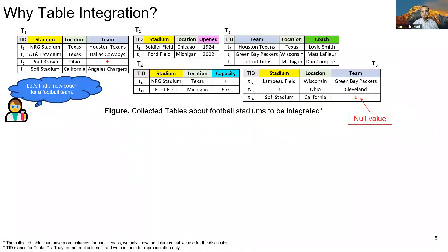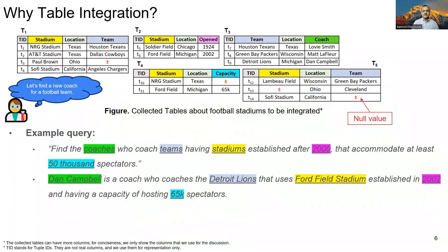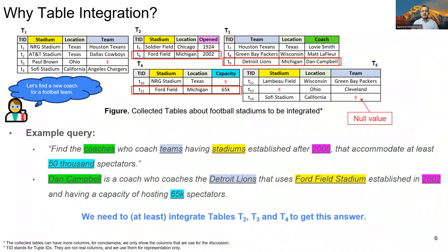The plus-minus symbols in this table represent null values present in the collected table. Also, TID is not a real column — we use it only to identify the tuples. To fulfill the team's requirement, the data scientist may want to run a query such as: find the coaches who coach teams having stadiums established after 2000 that accommodated at least 50,000 spectators. The answer to this question is Dan Campbell, who coaches Detroit Lions that uses Ford Field Stadium established in 2002 and having a capacity of 65,000 spectators. To answer this question, we need collective information from multiple tables, at least from tables T2, T3, and T4. This shows the benefit of integrating multiple tables to answer queries which go beyond a single table.